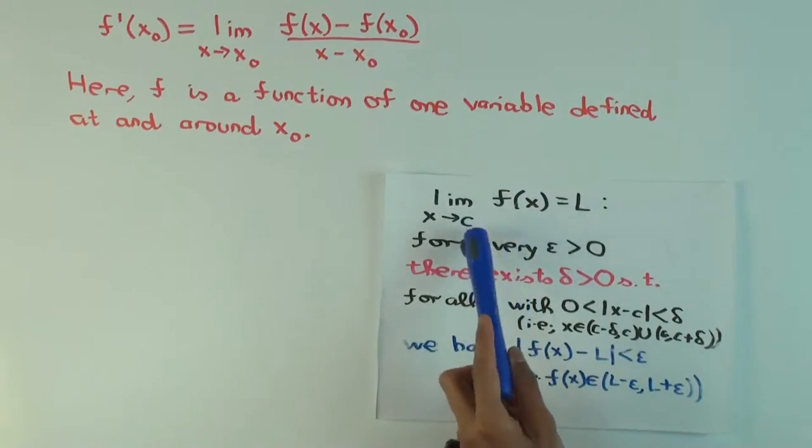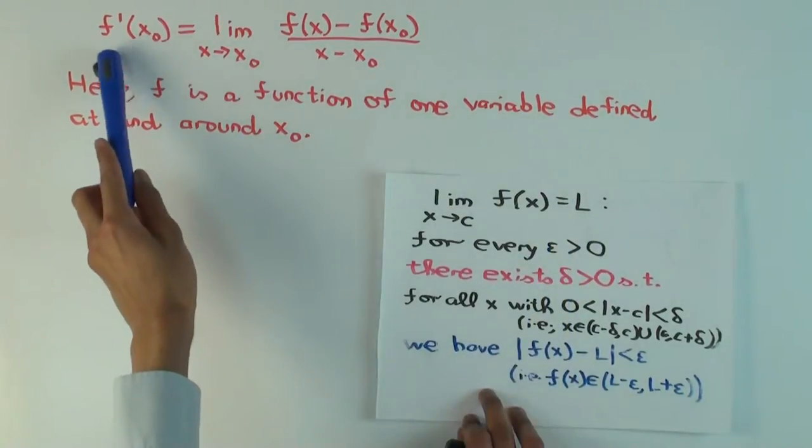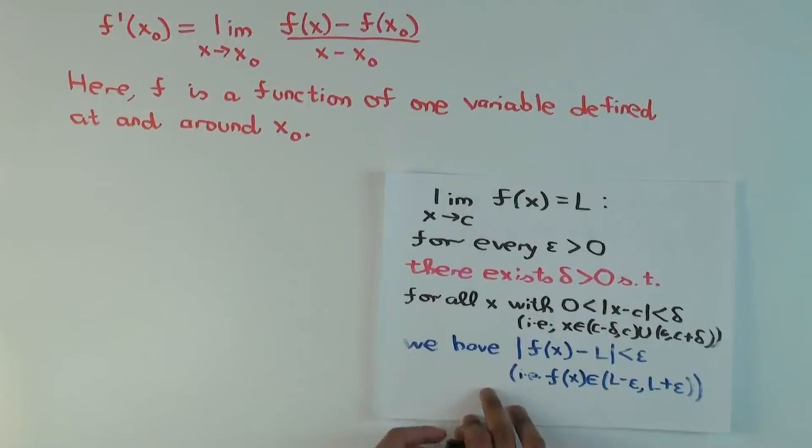And, so c is x naught, and l is what? What's the limit we are claiming this to have? F prime x naught. Okay? Mm-hmm. Okay? So, yeah, that's right, it's an instructive exercise.